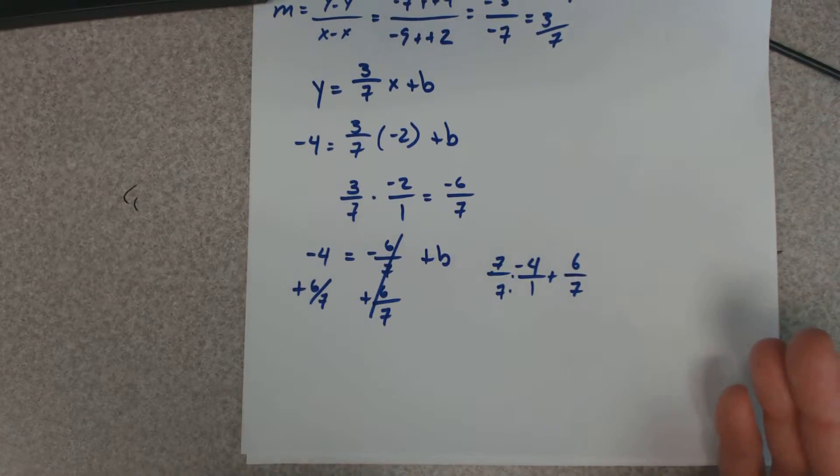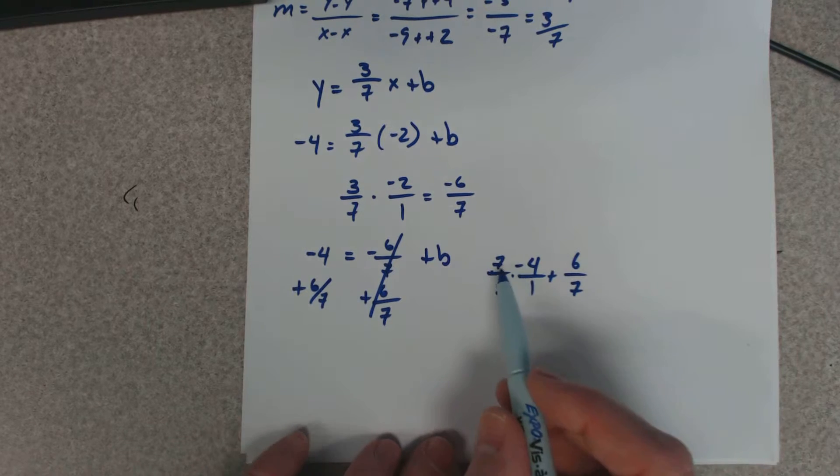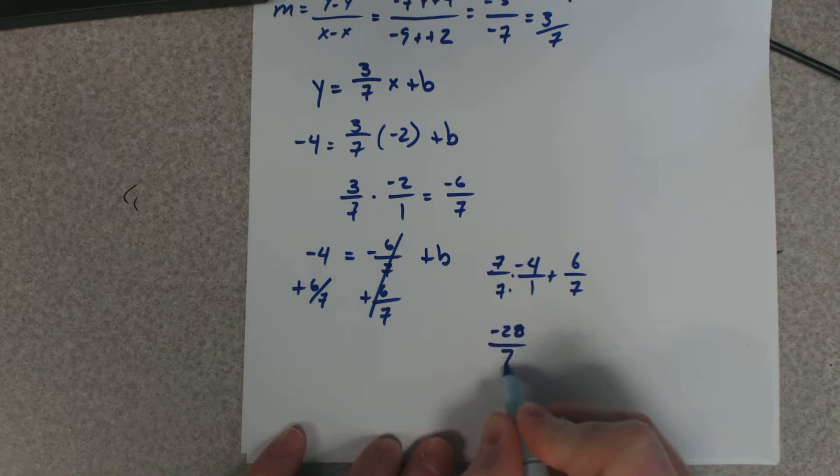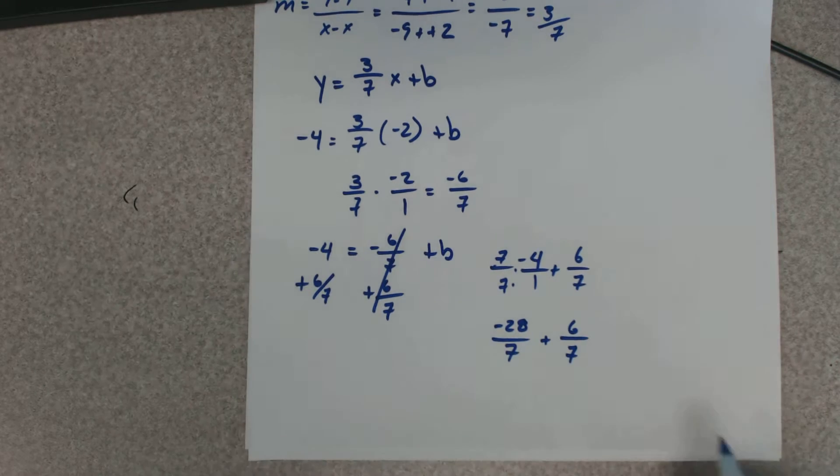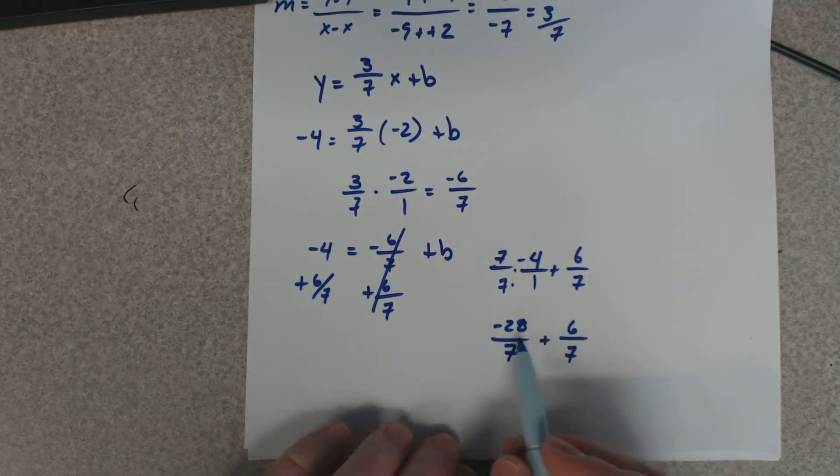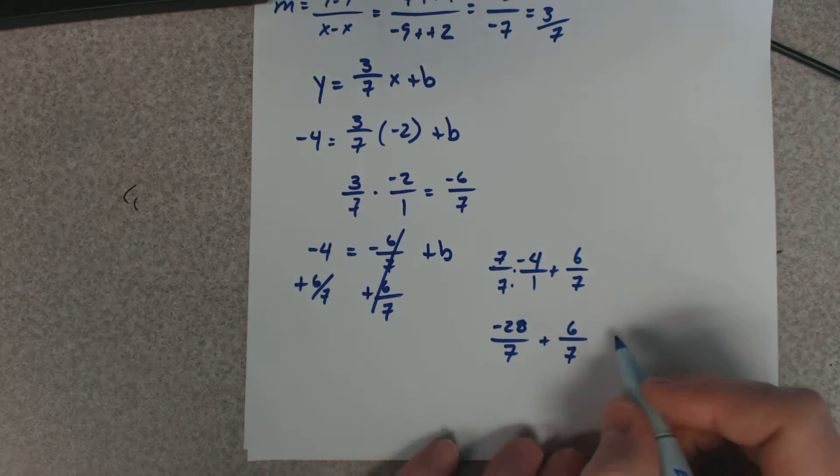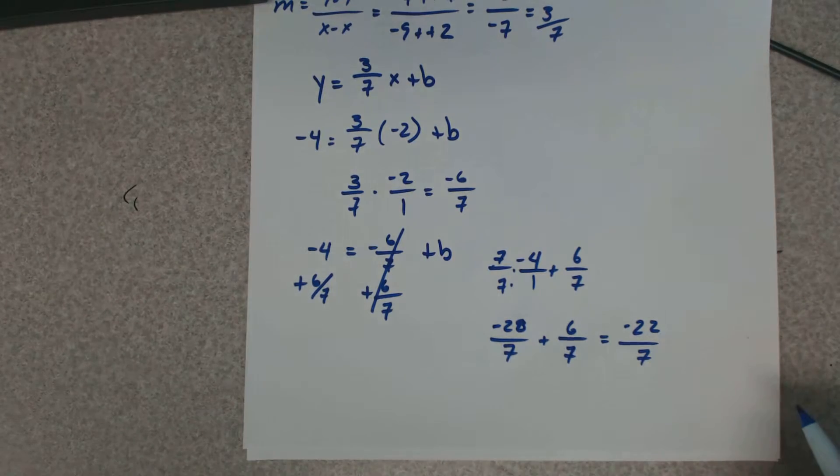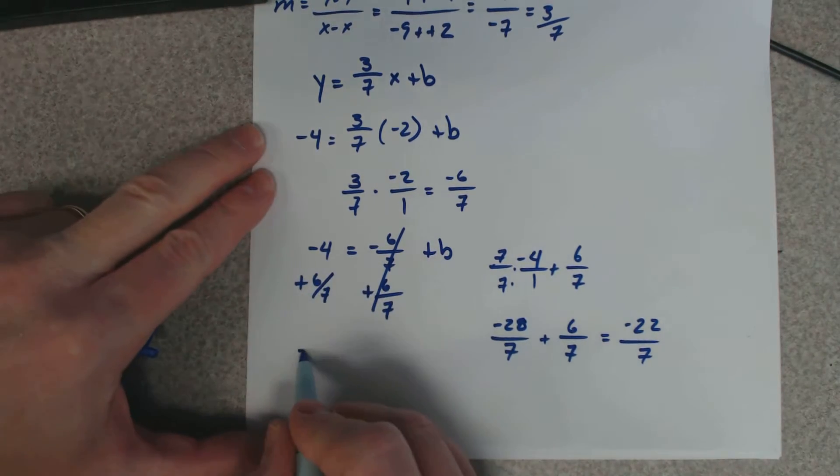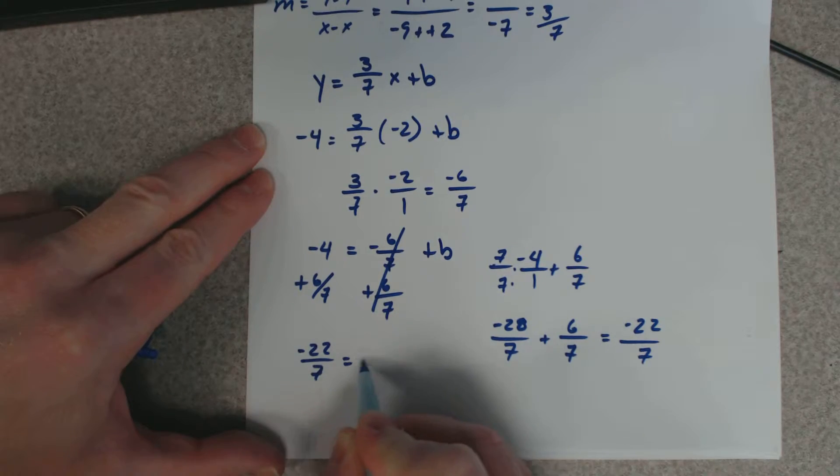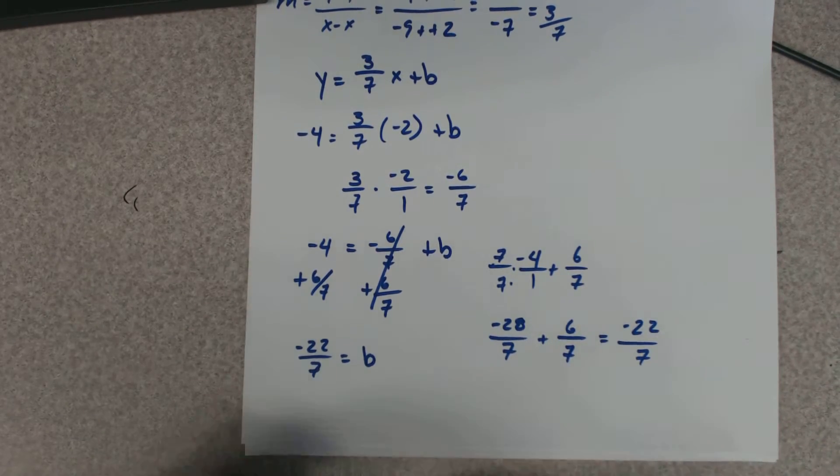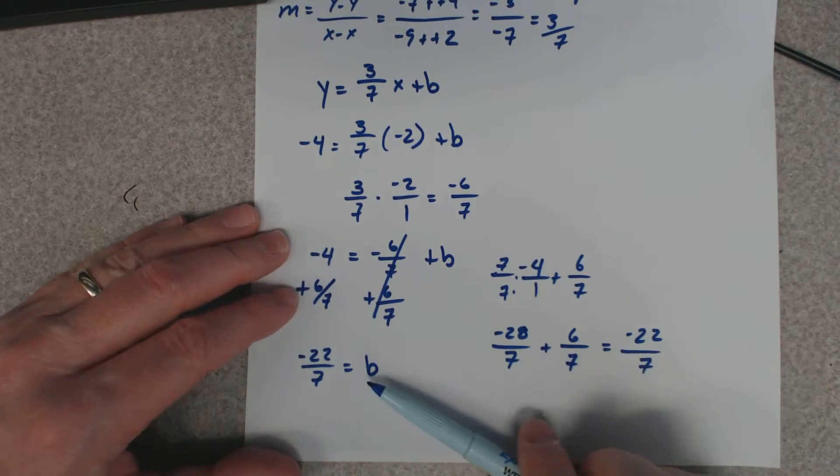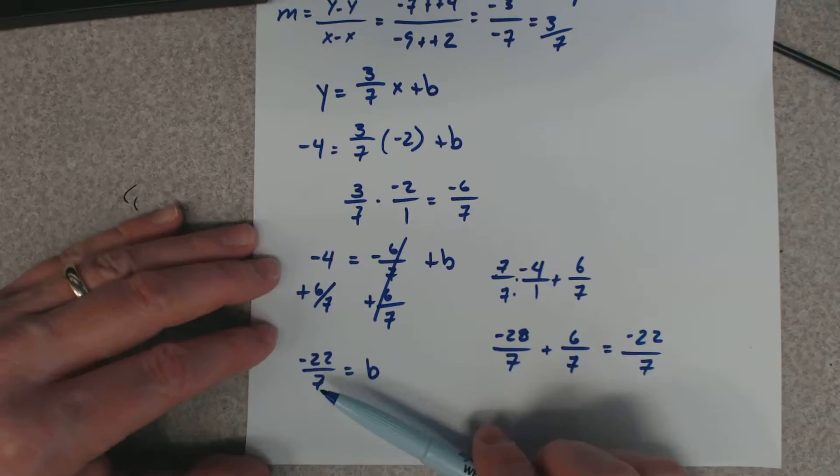Anything multiplied by 1 is itself, so it's legal to do this. Negative 7 times negative 4 is negative 28, 7 times 1 is 7, which is the whole point - getting the same denominators. Now negative 28 plus 6 is negative 22, and you keep the same denominator. So this value here is negative 22/7. This problem becomes a little more convoluted because of the fractions, but that's okay. The b value, the y-intercept, is negative 22/7.